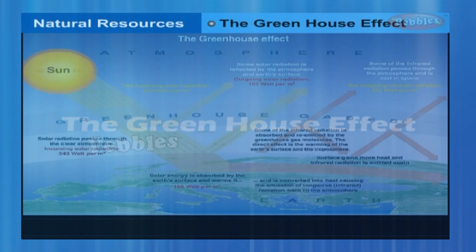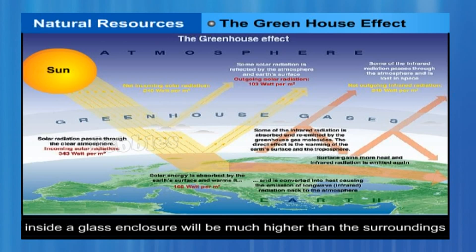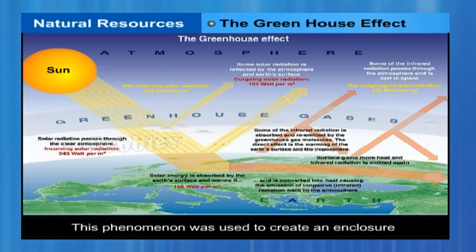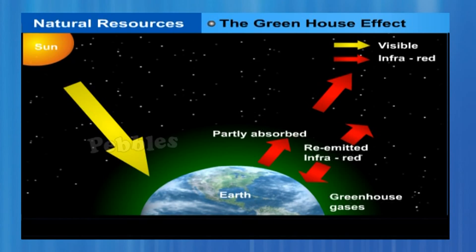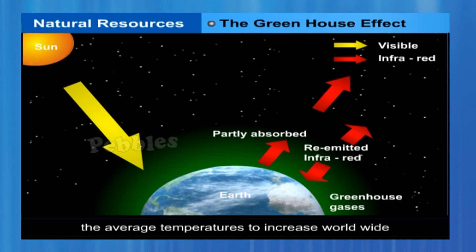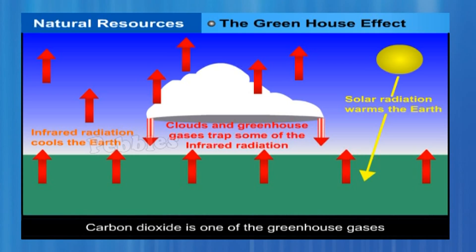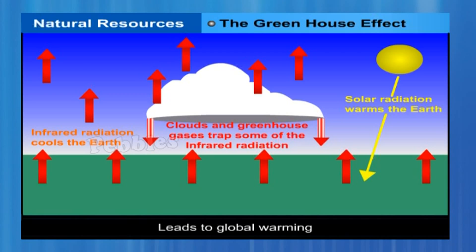The Greenhouse Effect. Heat is trapped by glass, and hence the temperature inside a glass enclosure will be much higher than the surroundings. This phenomenon was used to create enclosures where tropical plants could be warmed during winters in colder climates — such enclosures are called greenhouses. Greenhouses have also lent their name to an atmospheric phenomenon. Some gases in the atmosphere cause average temperatures to increase worldwide, and this is called the greenhouse effect. Carbon dioxide is one of the greenhouse gases, and an increase in its content in the atmosphere leads to global warming.